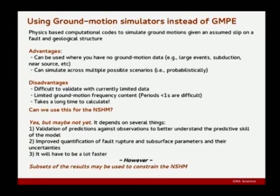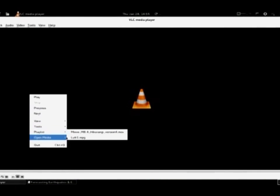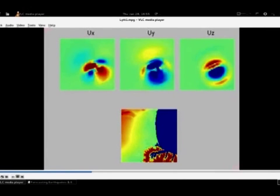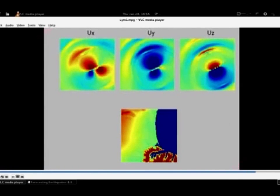Just a couple of movies to show quickly. First is a model done by Rafael Benitez using discrete wavenumber methods — this is really the pure physics, an analytical solution based on the wave equation, unaffected by gridding. The interesting thing about this is that it demonstrates the high accelerations seen in Christchurch can be explained by the physics of the rupture — you don't need site effects to explain that. You can see the three different components — the vertical and two horizontal — and watch the propagation of the main rupture. This is one that's easier to validate for a single prediction.